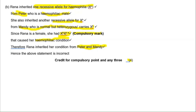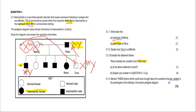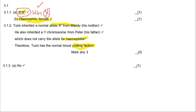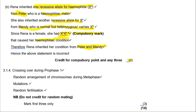Question 3.1.4 asks you to mention three factors that could have brought about variation evident in the phenotypes of the siblings. This is about sources of variation. Your sources of variation are: crossing over during prophase 1, random arrangement of chromosomes, and mutations. You can also include random fertilization. Important: do not write 'random mating' — it is random fertilization. Also, do not write 'random assortment' — it is random arrangement of chromosomes.